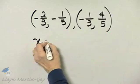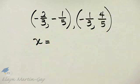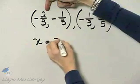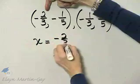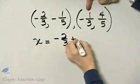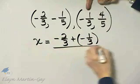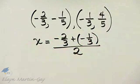The x value is basically the average of the x values of the endpoints. So the x value is this x value, negative 2 thirds, plus this x value, divided by 2. That's how you find the average.